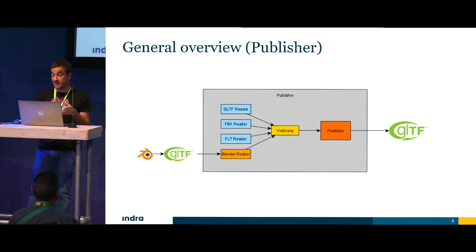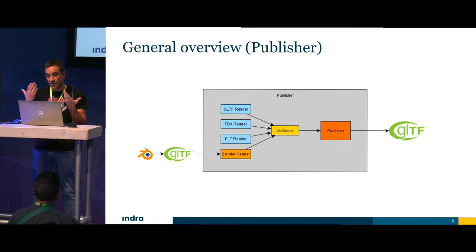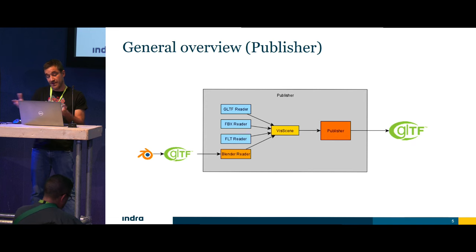To put Blender into this existing pipeline has been really simple. We are using the GLTF IO exporter because it exports every metadata, every dynamic property, every registered property — which is what we need. We also had to develop a specific Blender GLTF reader in C++. And everything is working.